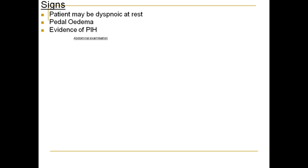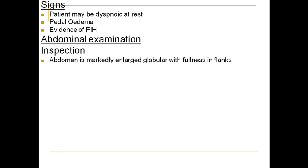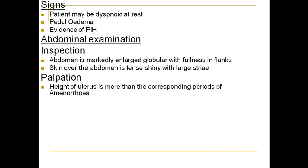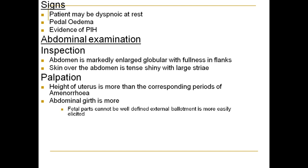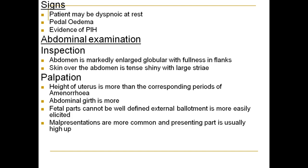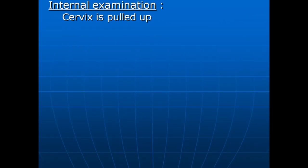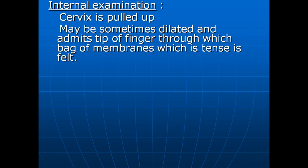On abdominal examination, the abdomen is markedly enlarged and globular with fullness in the flanks. Skin over the abdomen is tense and shiny with striae. Height of the uterus is more than the corresponding period of amenorrhea. Abdominal girth is more, fetal parts cannot be well defined, external ballottement is easily elicited, malpresentations are more common, the presenting part is usually higher, and fluid thrill is present. Fetal heart sounds are not heard distinctly on auscultation.